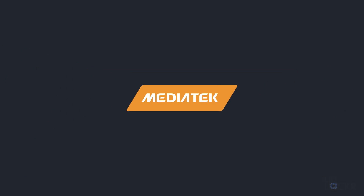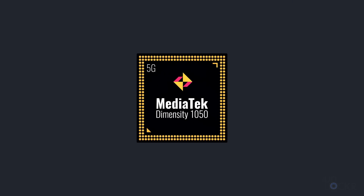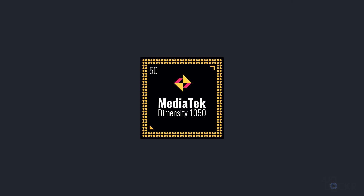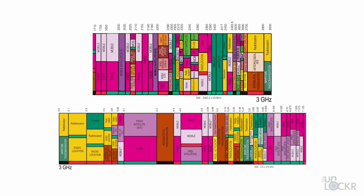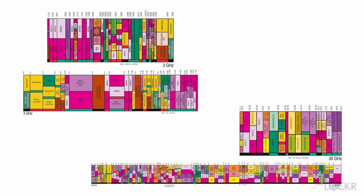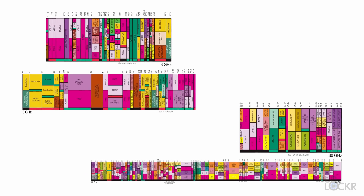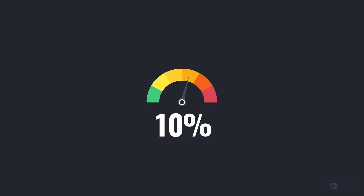MediaTek, who partnered with me to make this video, just launched their first ever chipset that supports millimeter wave, called the Dimensity 1050. It can actually connect to sub-6 and millimeter wave simultaneously, compared to some of their competitors that can only connect to millimeter wave and LTE at the same time, which in the real world translates to 53% faster speeds.